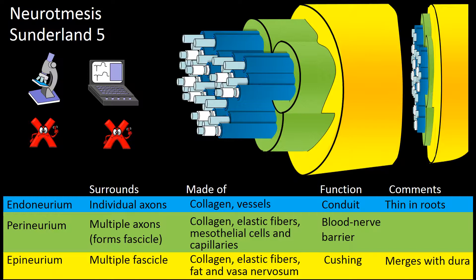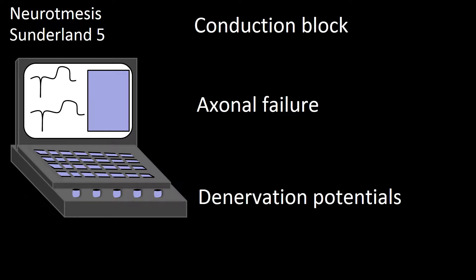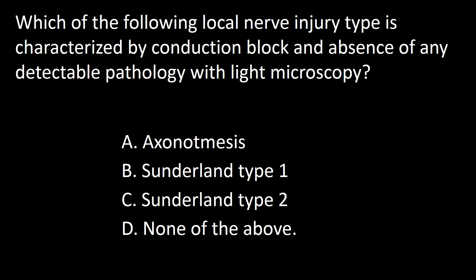The electrodiagnostic signatures of neurotmesis, Sunderland type 5, are conduction block early after the lesion, and a little bit later axonal failure and denervation potentials. So the answer to this question is B.